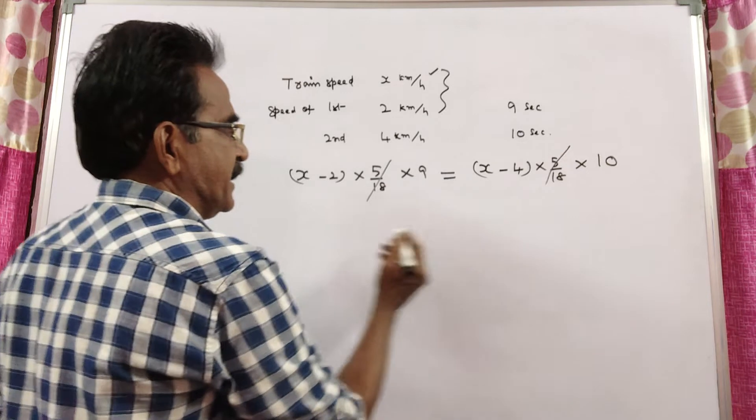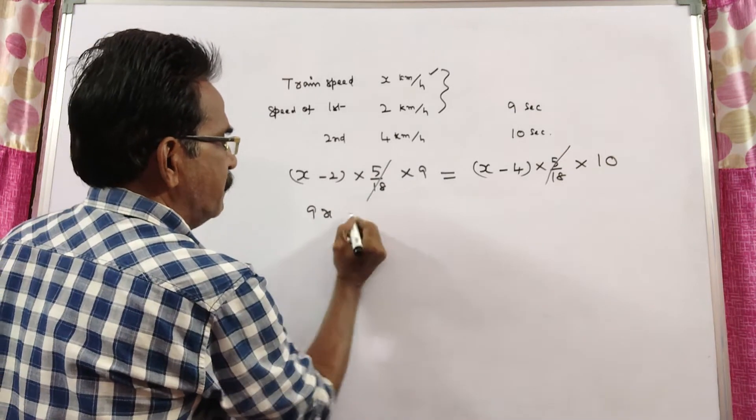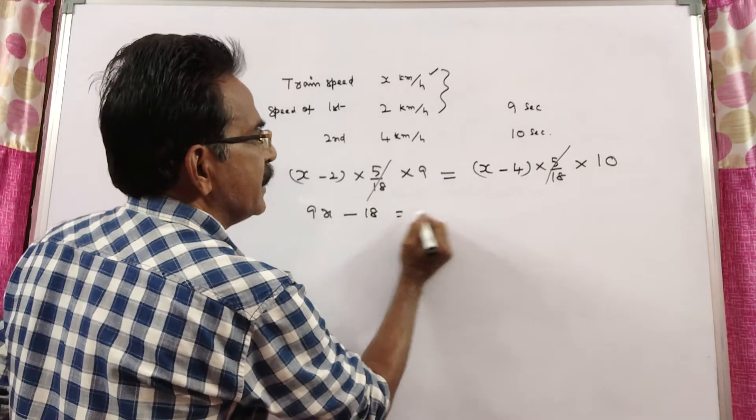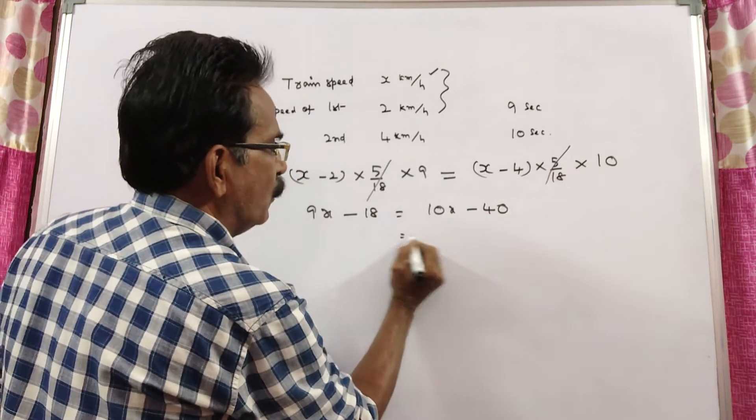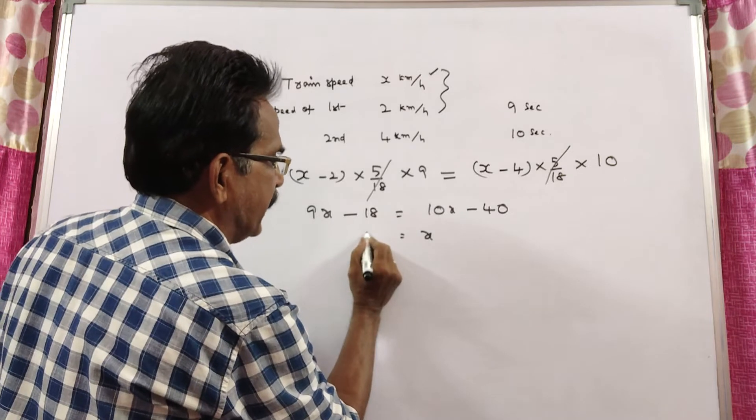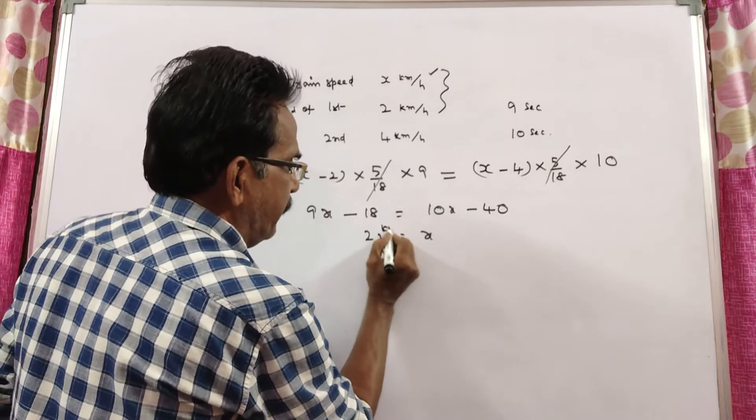So, 5 by 18, 5 by 18 gets cancelled. 9x minus 18 is equal to 10x minus 40. So, x is equal to, x is equal to 40 minus 18, 22 kmph.